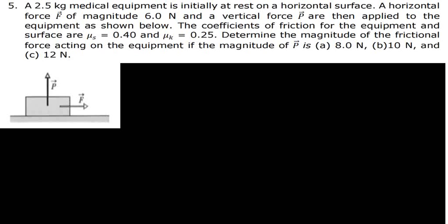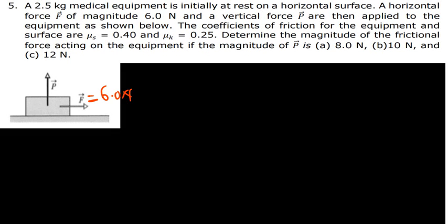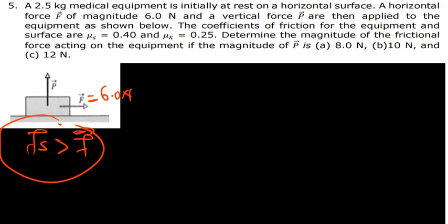Remember, we have two things here. In each case, we first have to find the static friction. Why? Because we have been given the applied force of 6.0 N. If we find the static friction and discover that it is greater than the applied force, then we conclude this object was not moving. Therefore, the friction present at that point is static friction, and that is our answer. If we discover that the static friction is less than the applied force, then we conclude the object was moving.